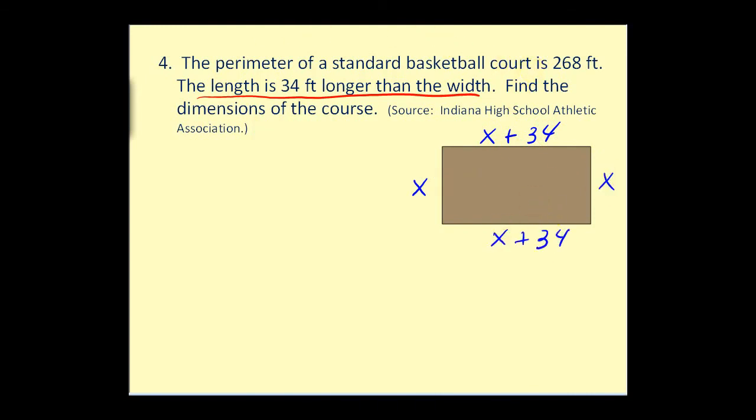Now remember when we talk about perimeter, it's the distance around the outside. And we're given that the perimeter is 268 feet. So the equation would be the sum of these four sides must equal 268. Well if we sum these four sides, you can see there are four x's. We'd have four x. And we also have two 34's. 34 plus 34 would be 68. Must equal 268 feet. So let's go ahead and solve this.